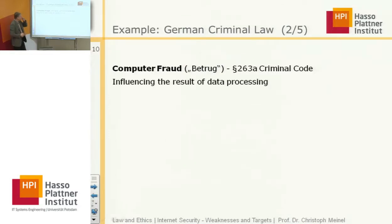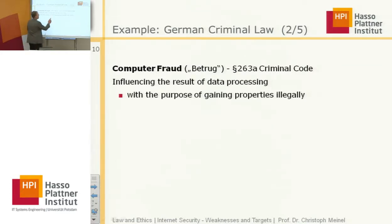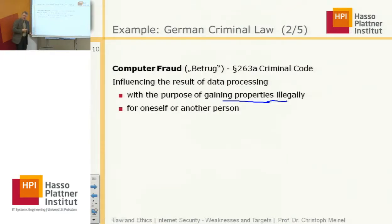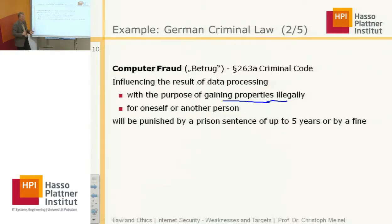Another example is computer fraud. §263a of the German criminal code regulates: influencing the result of data processing with the purpose of gaining properties illegally for oneself or for a third party — that will be punished by a prison sentence up to five years or by a fine. So it is forbidden to influence data processing systems with the purpose of gaining properties illegally.